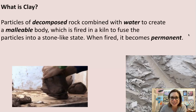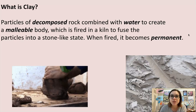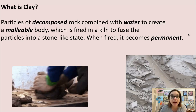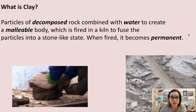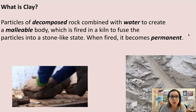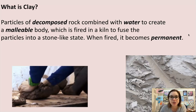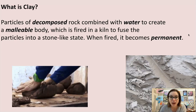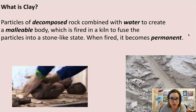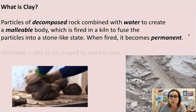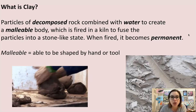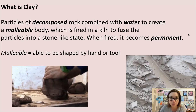So what is clay? It's particles of decomposed rock combined with water to create a malleable body, which is fired in a kiln to fuse the particles into a stone-like state. So when it's fired, it becomes permanent. What does malleable mean? It means able to be shaped by hand or a tool.